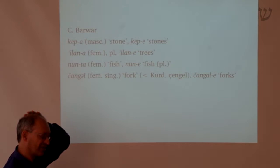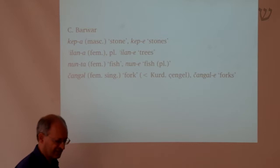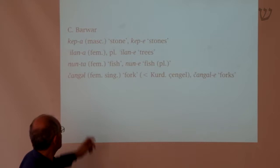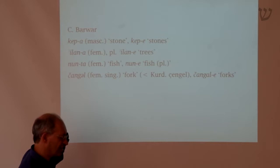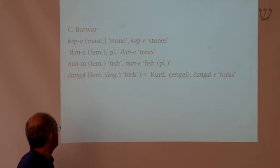Plurals are formed by various endings. The technique is to remove the singular ending and replace it with a plural ending. The most common plural form in the NENA dialects is the ending 'e', which ultimately goes back to the determined state plural 'ayah'. It's now basically a plain plural marker — it doesn't express definiteness. This 'e' ending is used with masculine nouns like 'kepa' → 'kepe' (stones) in Barwa, but also with feminine nouns like 'ilana' (tree) → 'ilane' (trees). You even use it sometimes replacing the feminine ending 'ta'.